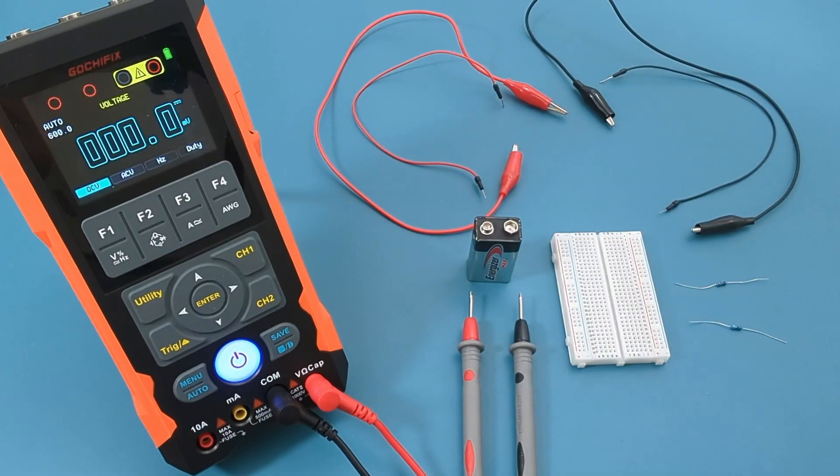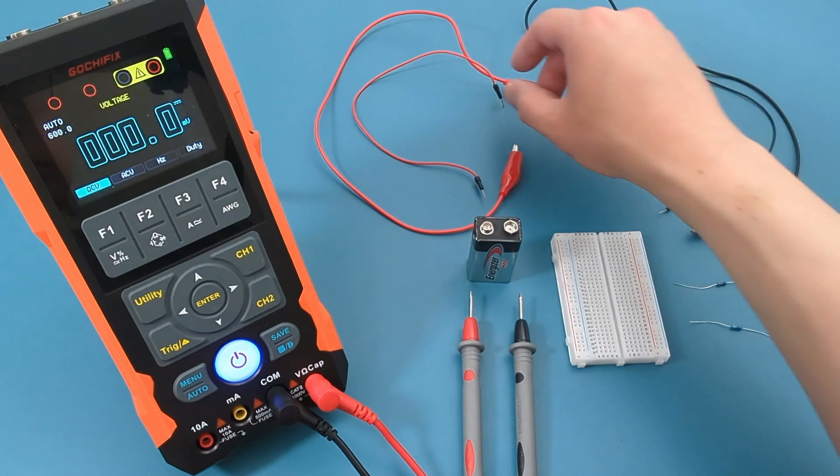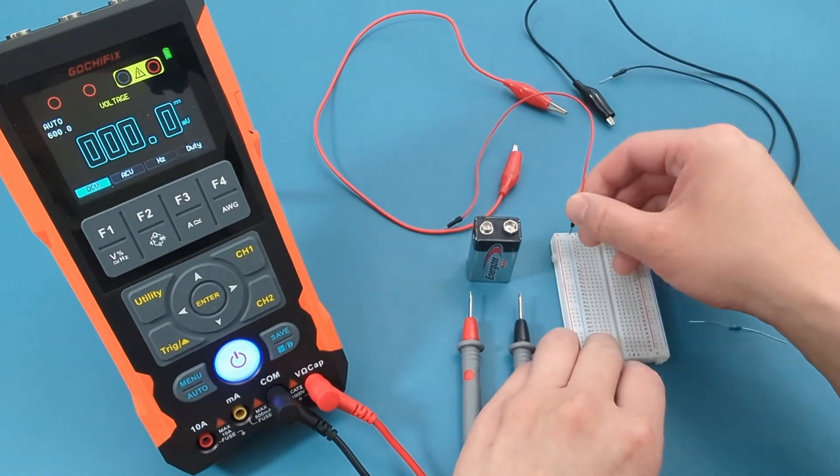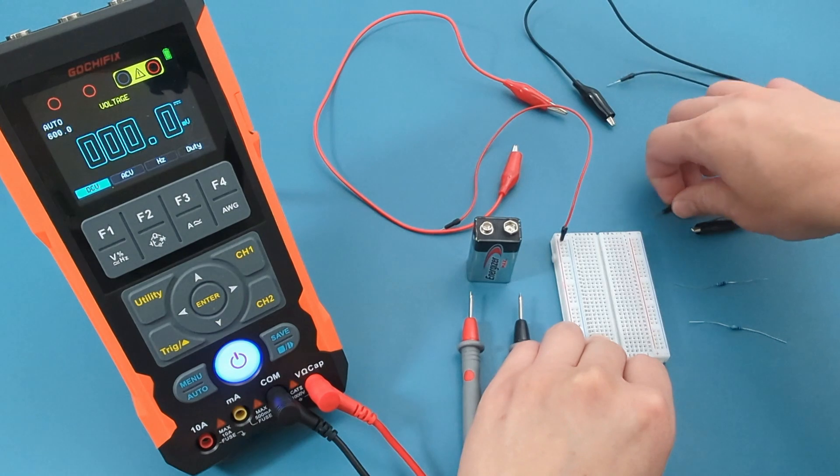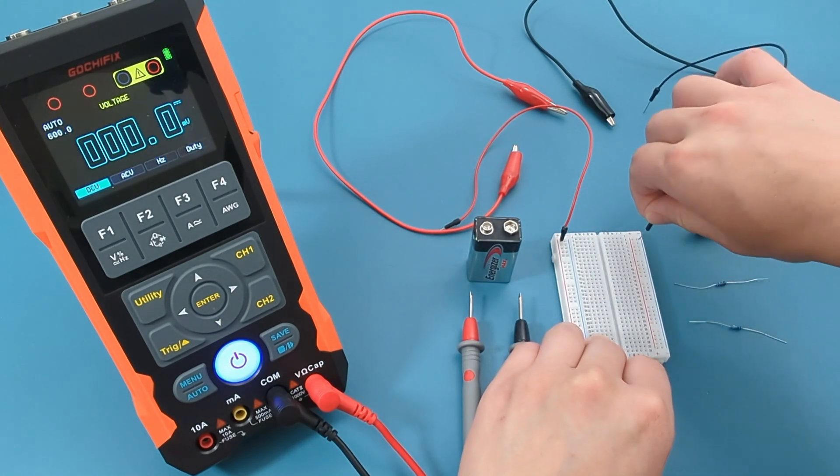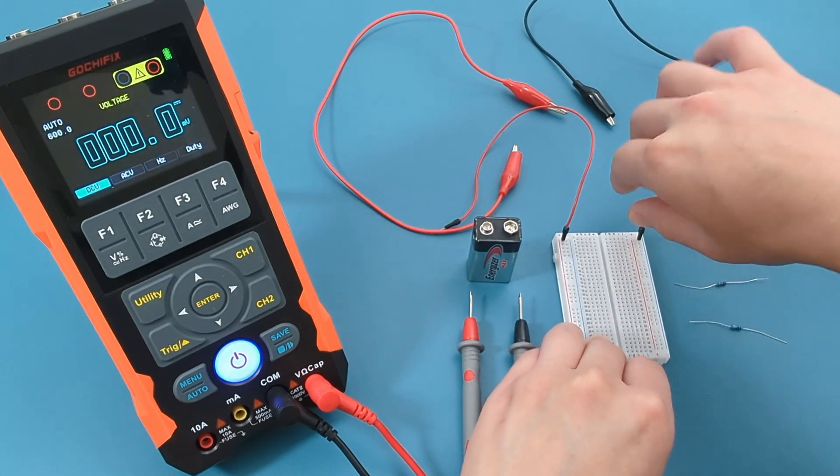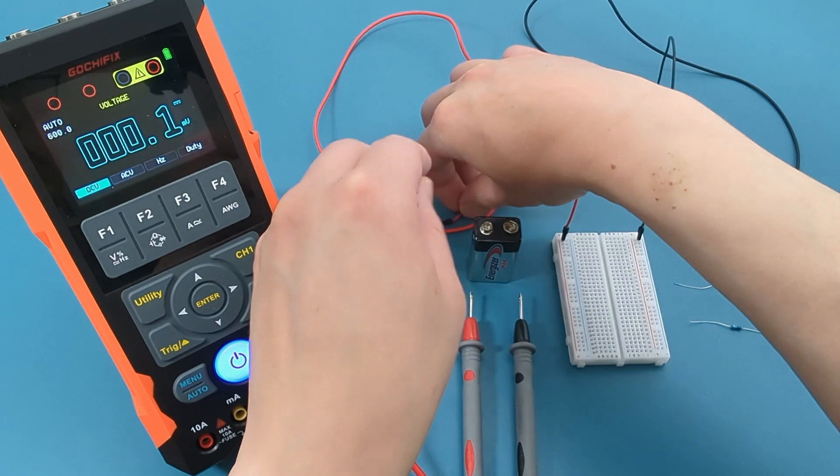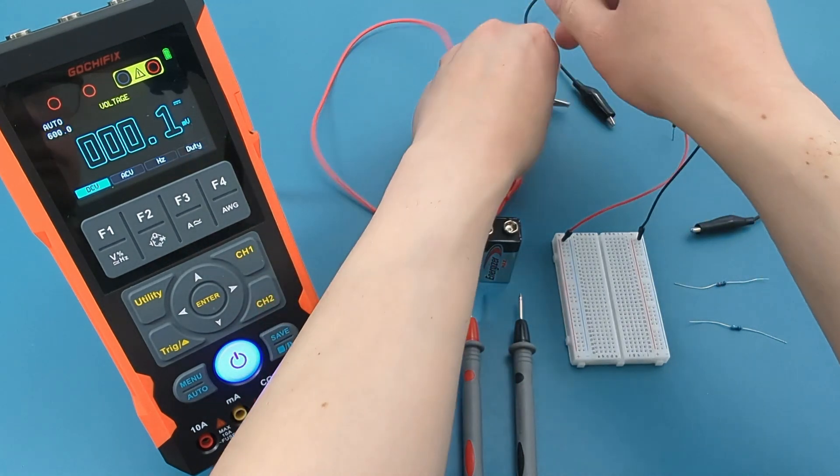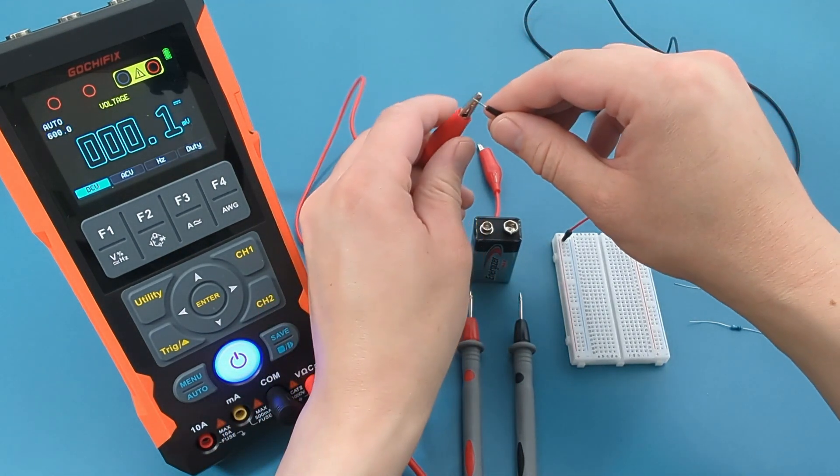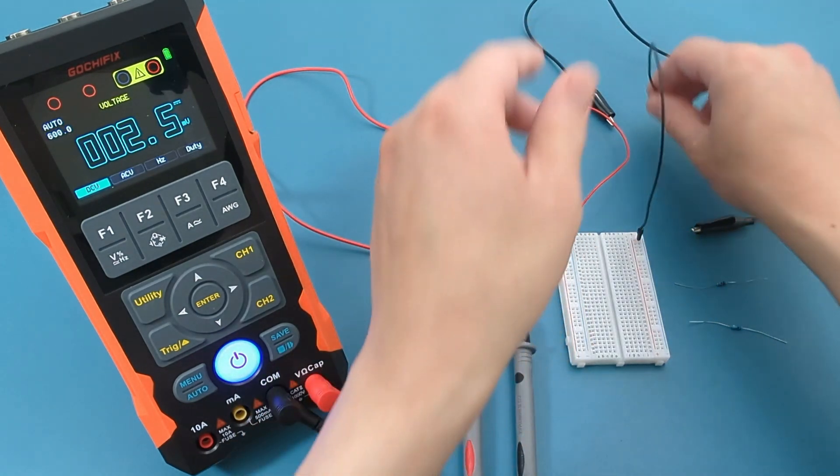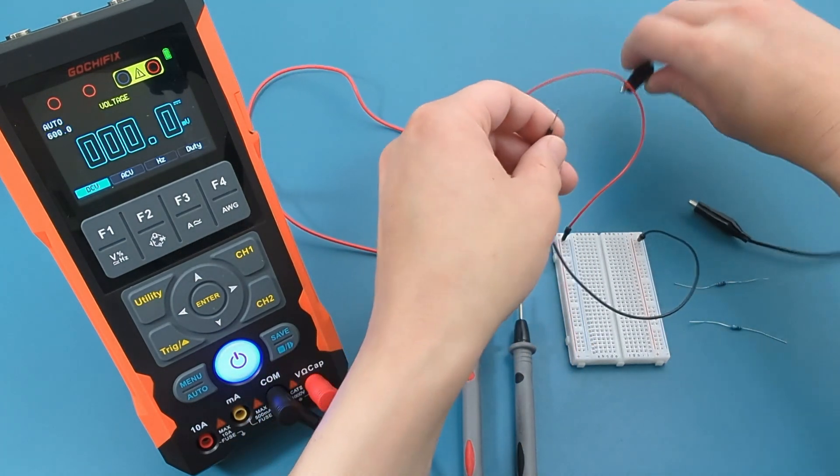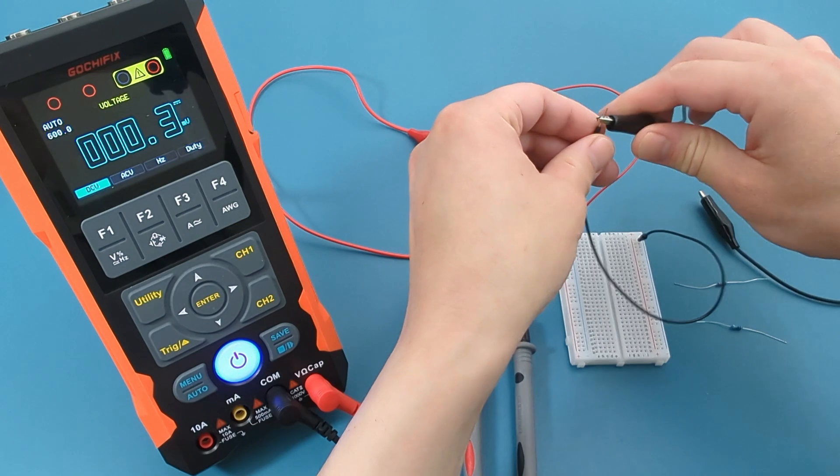Here is a demonstration of a voltage divider with the help of a breadboard. Connect the red jumper wire to the positive end of the breadboard. Connect the black jumper wire to the negative end of the breadboard. Connect the other end of the red jumper wire to the red alligator clip. Connect the other end of the black jumper wire to the black alligator clip.